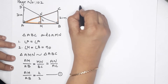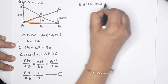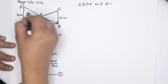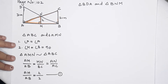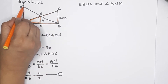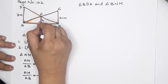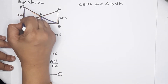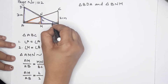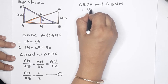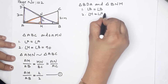Now I will consider the second triangle. Consider triangle B, D, A and triangle B, N, M. These two triangles: angle B is equal to angle B — common angle. Second: this is 90 degrees. Angle M is equal to angle A, which is equal to 90 degrees.